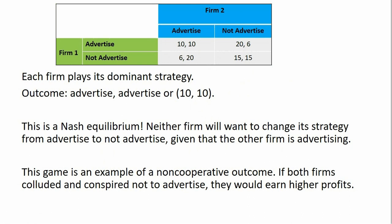A few other passing notes: this outcome is an example of a non-cooperative or non-collusive outcome. The idea is that if somehow these firms could get together and commit to not advertise, they could do collectively better. This might be referred to as a cartel outcome or collusive outcome, where the firms conspire to not advertise to maximize profits. This cartel outcome would be more likely if this was a repeated game, where firms continue to have this relationship period after period. In that setting, it may be more likely that they could collude and restrict to not advertising.